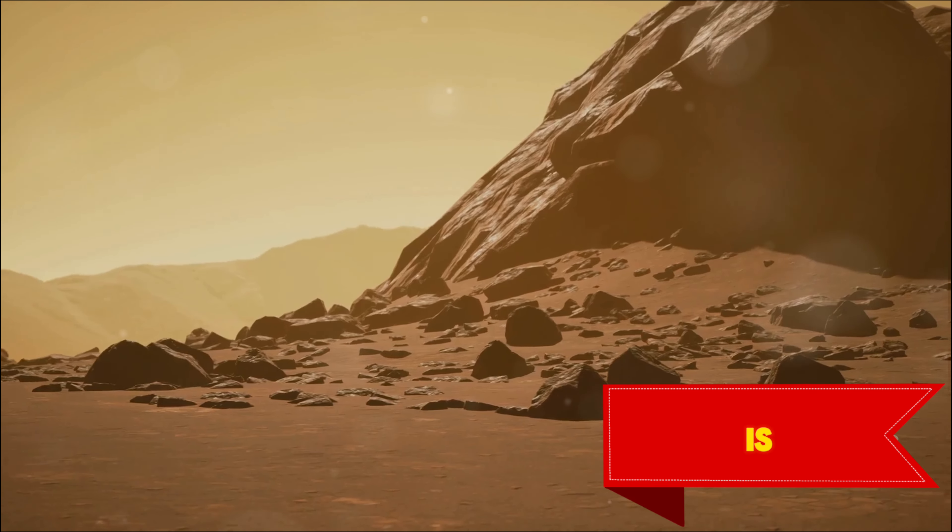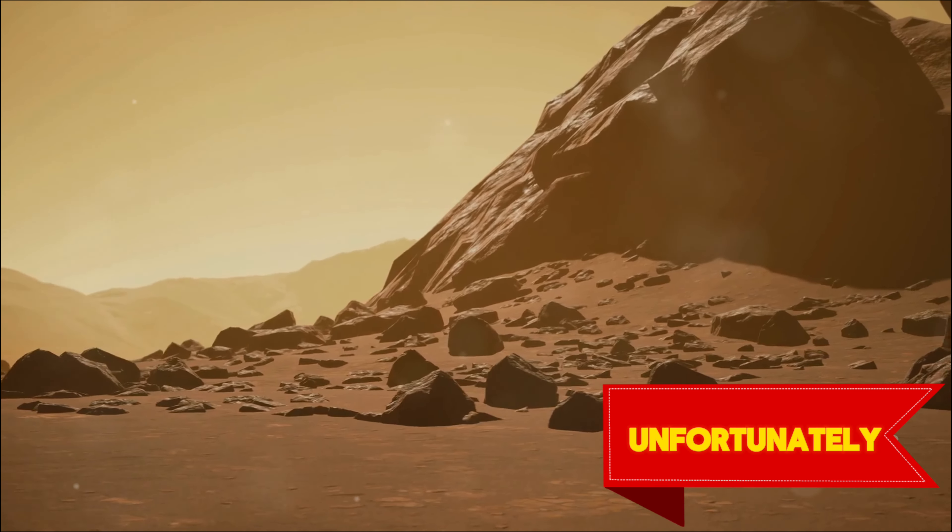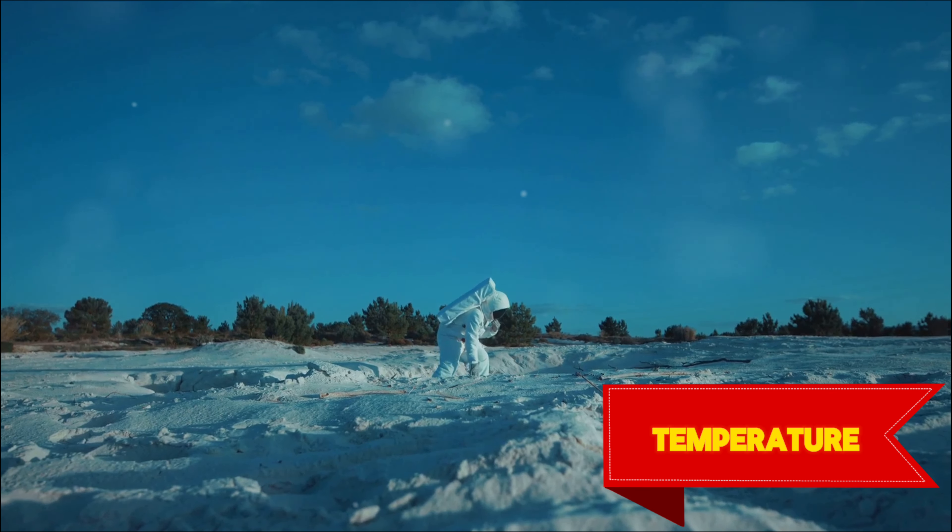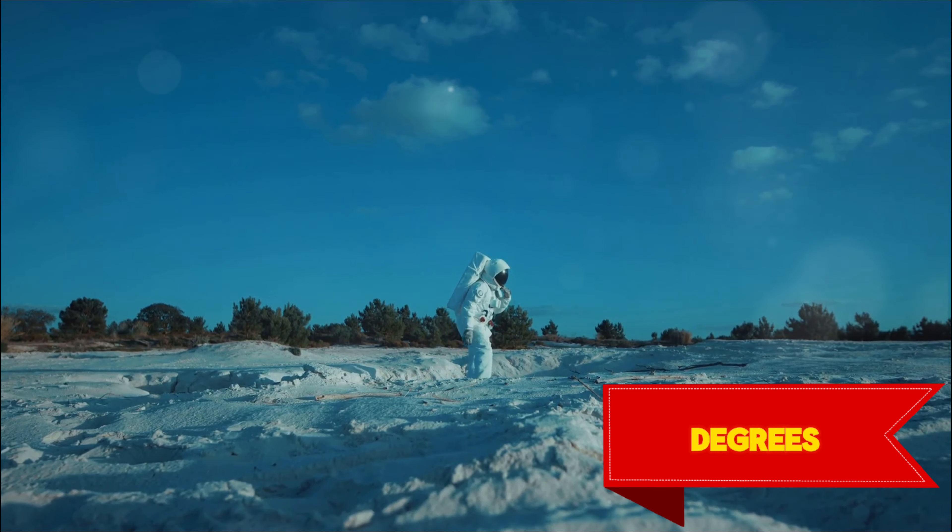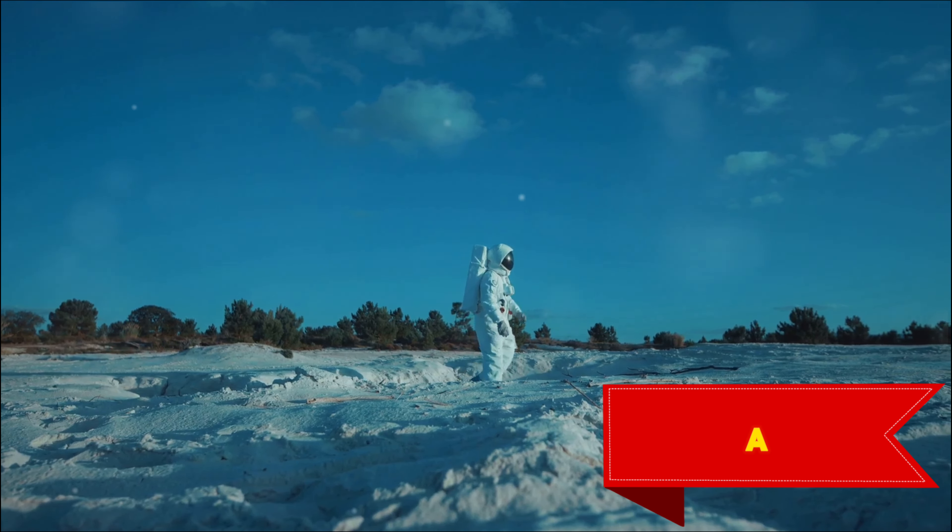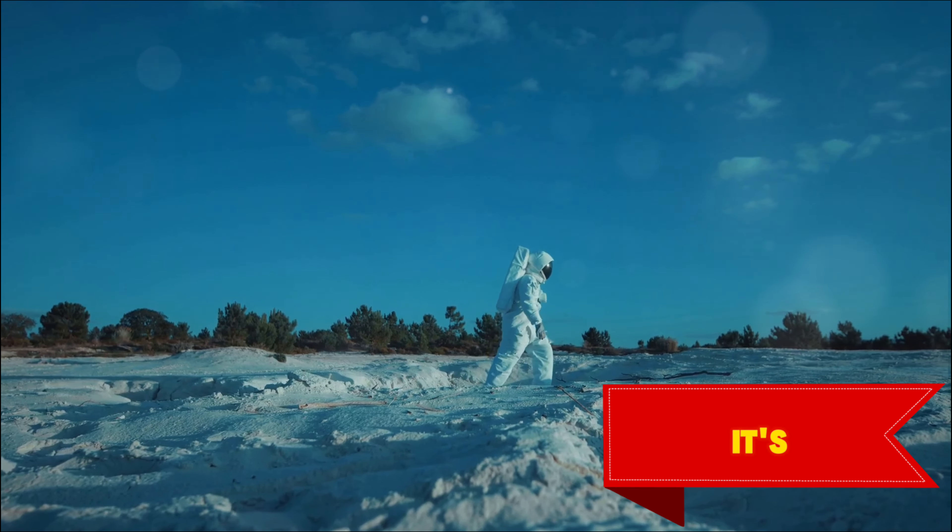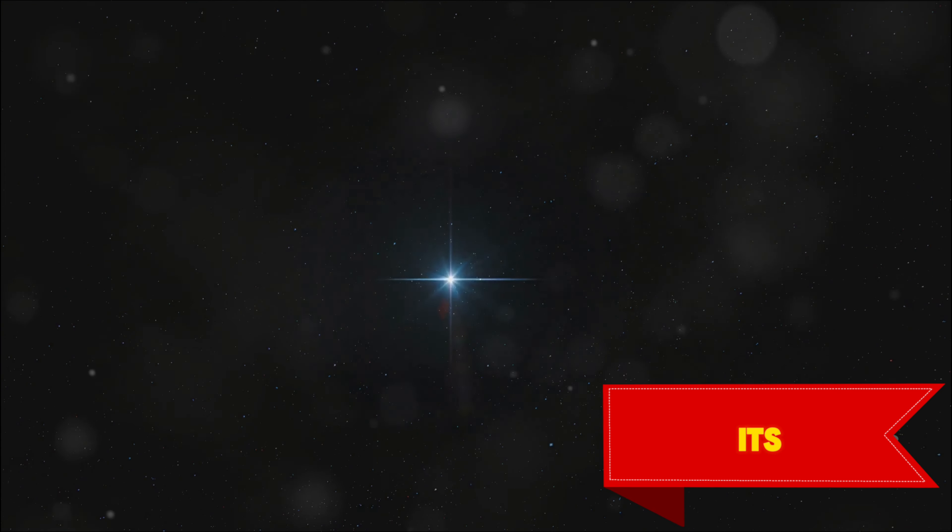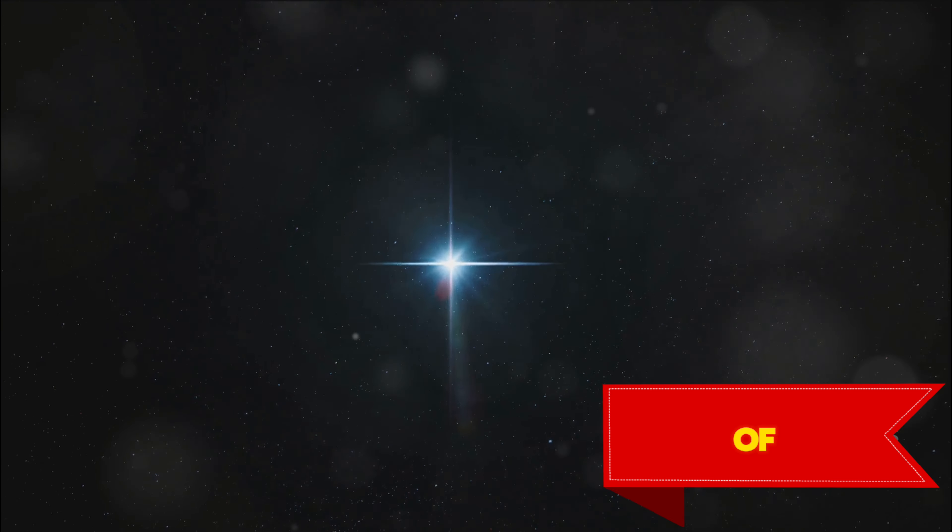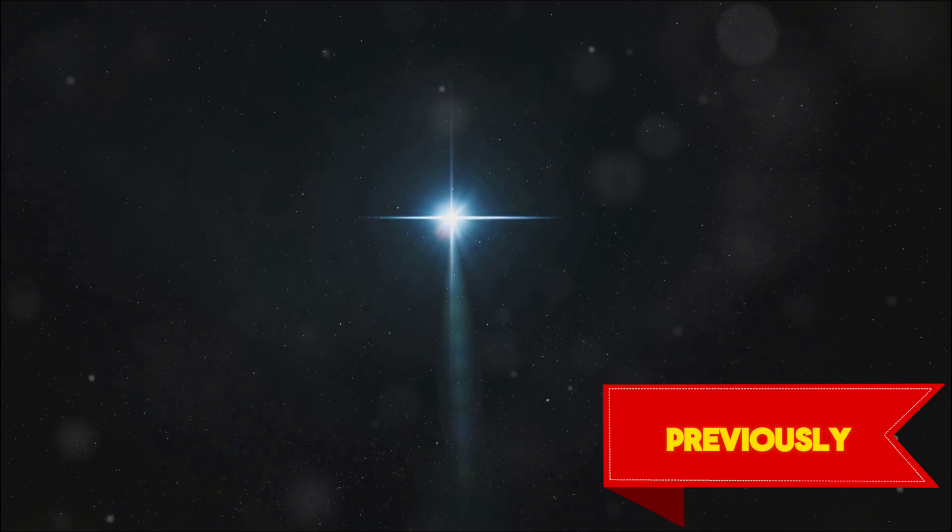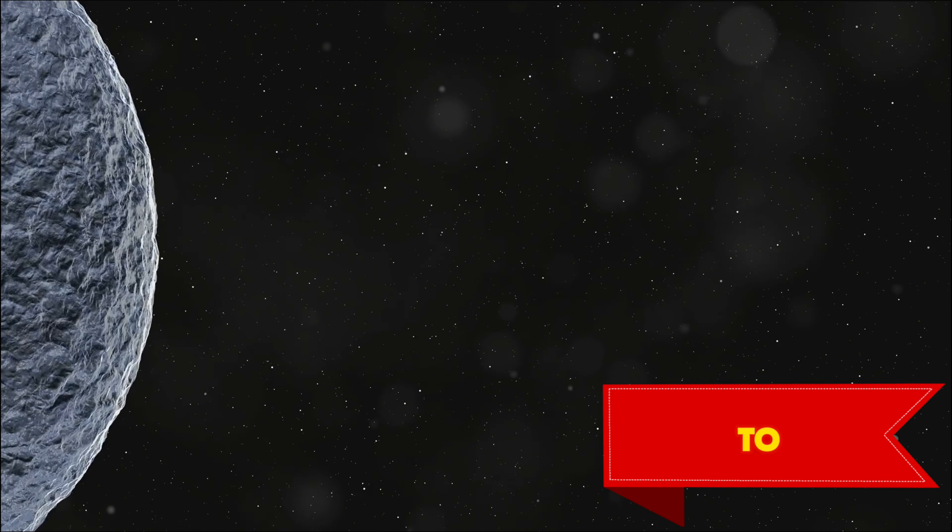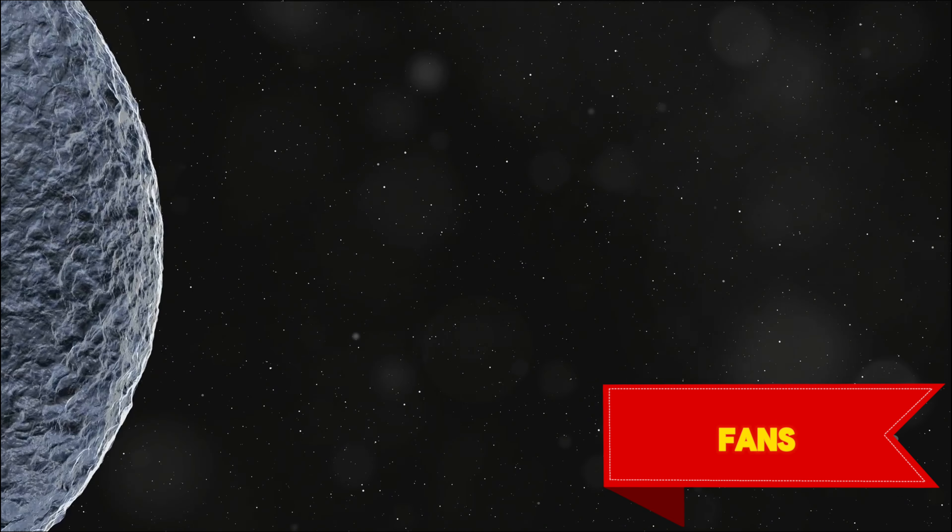Kepler-16b is roughly the size of Saturn and unfortunately, too cold to sustain life as we know it. Its surface temperature hovers around minus 85 degrees Celsius, making liquid water a distant dream. Yet, it's the planet's extraordinary environment that captures our imagination. The cultural impact of Kepler-16b is significant. Its discovery validated the existence of circumbinary planets previously only seen in science fiction. It's a real-life Tatooine that continues to inspire astronomers and sci-fi fans alike.